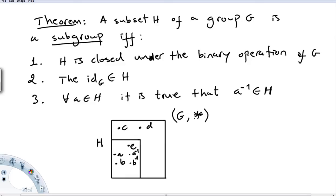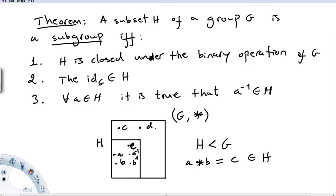So if we have a group G with an operation, and H is a subset of the set G, we will say that H is a subgroup of G if and only if H is closed under the binary operation of G — meaning that if I operate A and B, the element C that I get through this operation will also be in H.